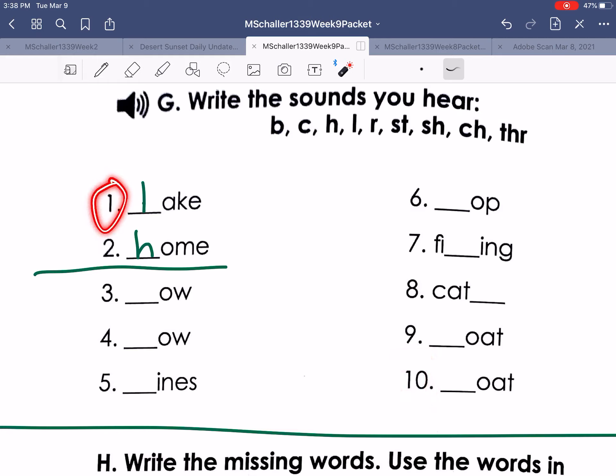Again, number one, lake. Number two, home. Number three, throw. Number four, row.